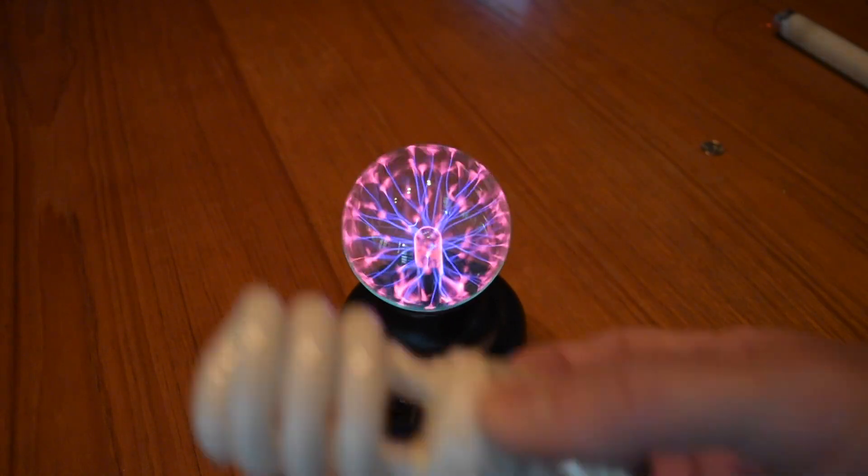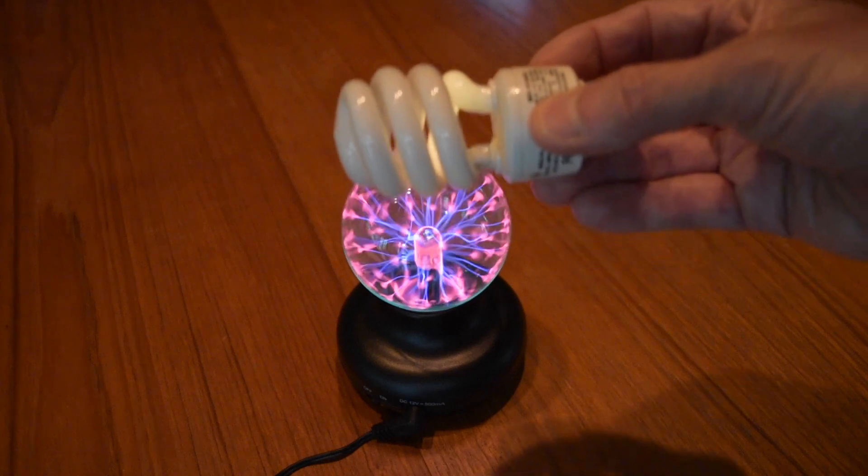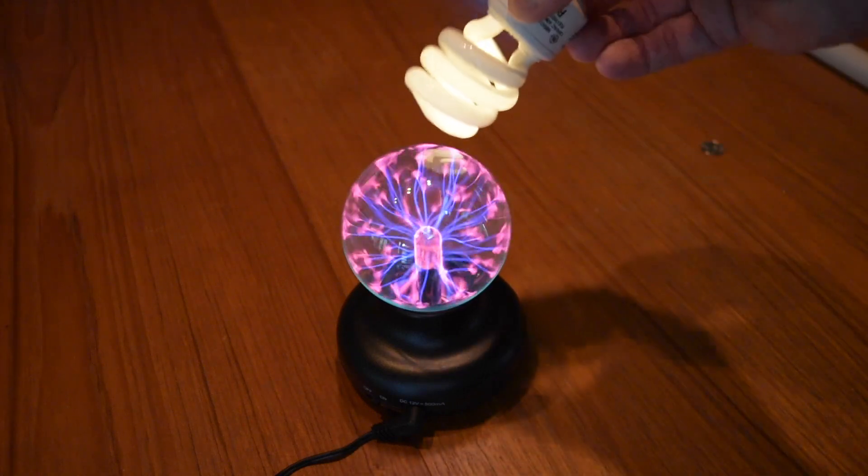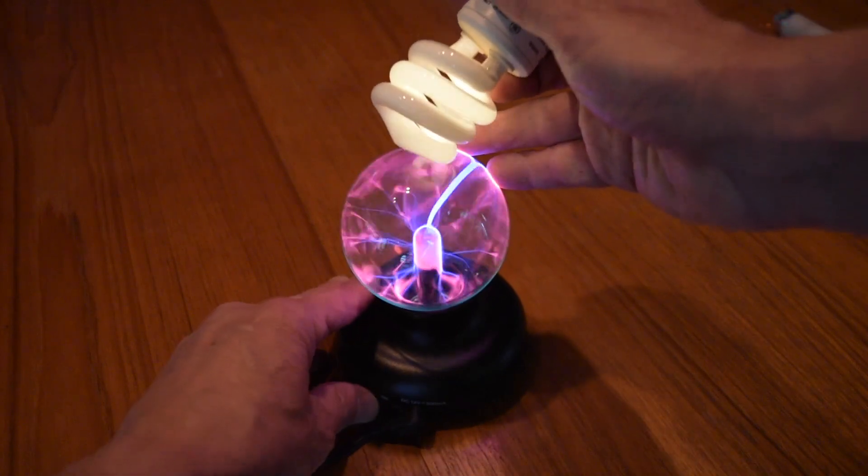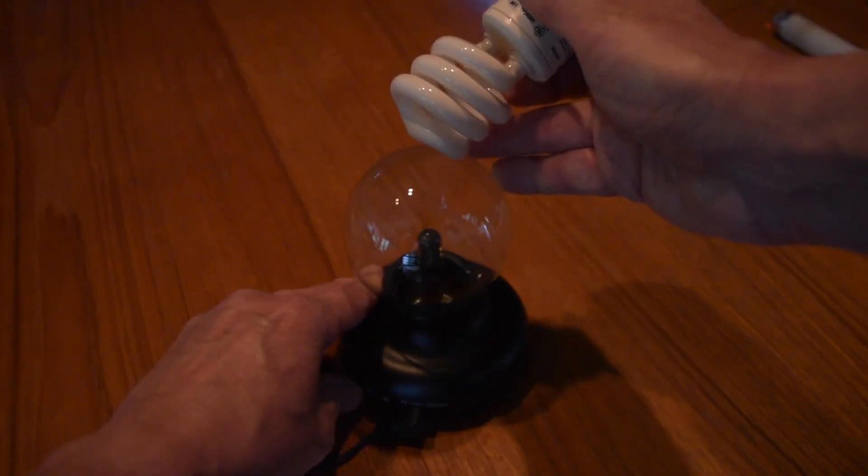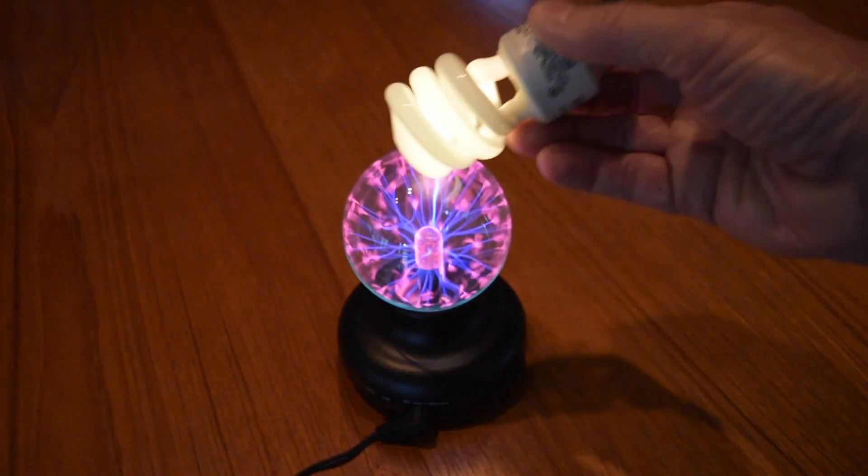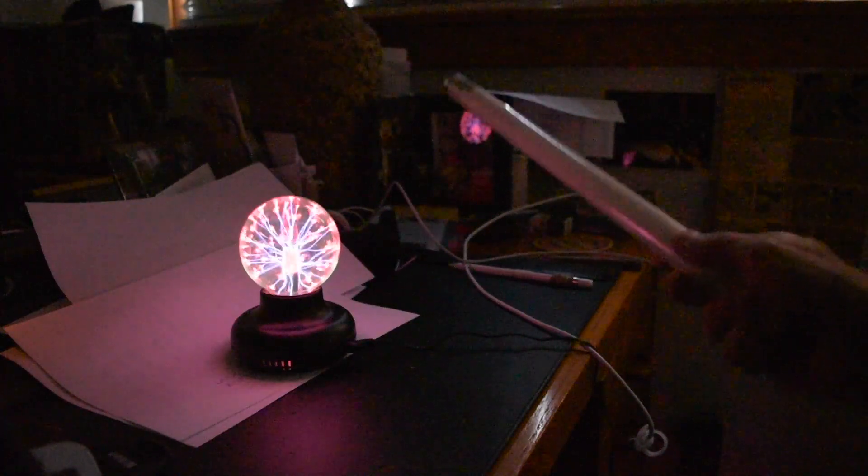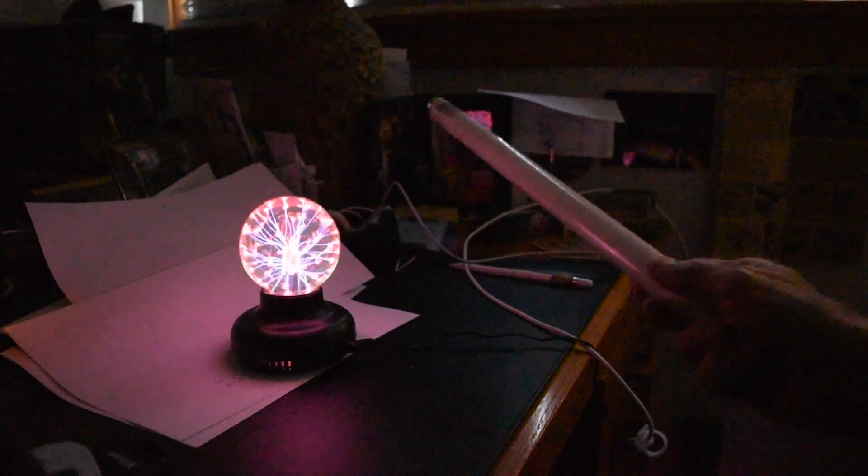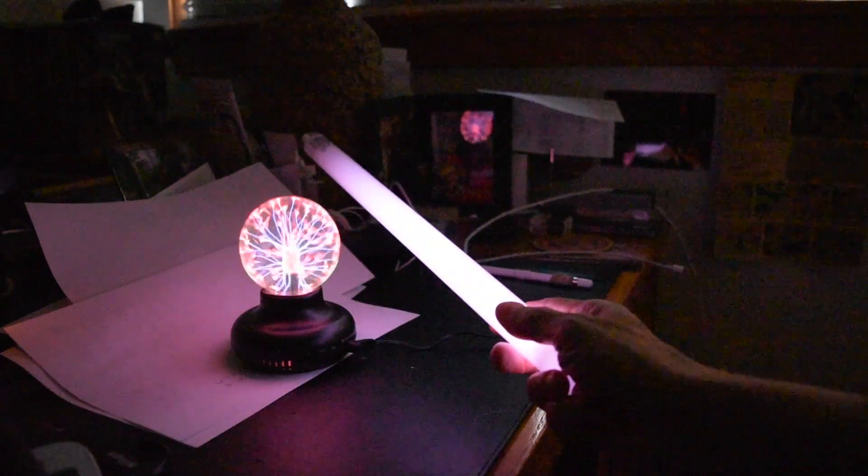If I take a fluorescent bulb and move it close, you see that it lights up, and if I turn the plasma globe off, it goes off. As I bring a fluorescent tube towards the globe, it will light.